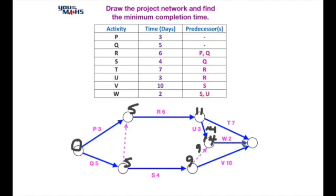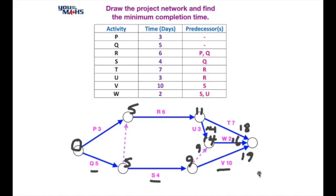We've got three arrows checking towards the final node: eleven plus seven for T is eighteen across the top; fourteen plus two for W is sixteen in the middle; and nine plus ten for V is nineteen across the bottom. The largest is nineteen. Tracking back, the critical path runs through Q, S, and V, and the best time to complete the project is 19 days.